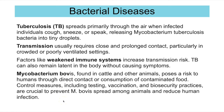Mycobacterium bovis is the other strain, found in animals such as cats and badgers, and it poses a risk to humans through direct contact or consumption of contaminated food. Control measures include testing, vaccination and other biosecurity practices, such as trying to prevent the spread through having more space, which is crucial to prevent spread among animals and reduce human infection.